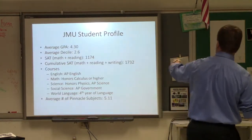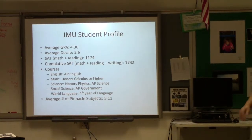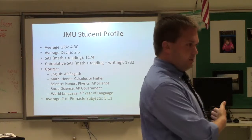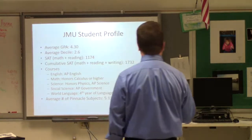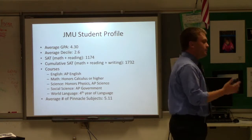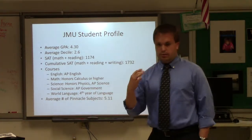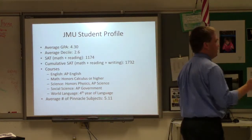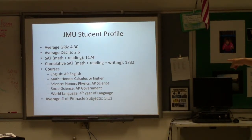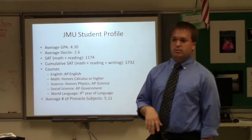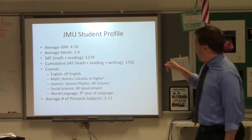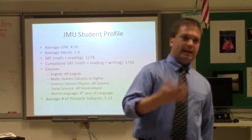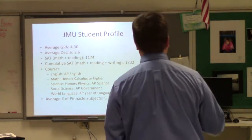JMU's GPA graph starts at 3.5 — I don't want someone coming in at 2.9 saying they love JMU. There is a joke that JMU is Monticello University — more kids applied to JMU than any other state school and more kids got in. JMU offers a lot in student opportunity, a slightly more forgiving admissions standard, but a very high quality education with access to professors, the SAS, Division I Athletics, and strong social life. Average SAT was 1174; average cumulative SAT was 1732. For courses: AP English highly selected, honors calculus or higher, honors math analysis being the hump to get over. Honors physics highly selected, any AP science, AP Government, fourth year of language. Average pinnacle subjects: 5.11.